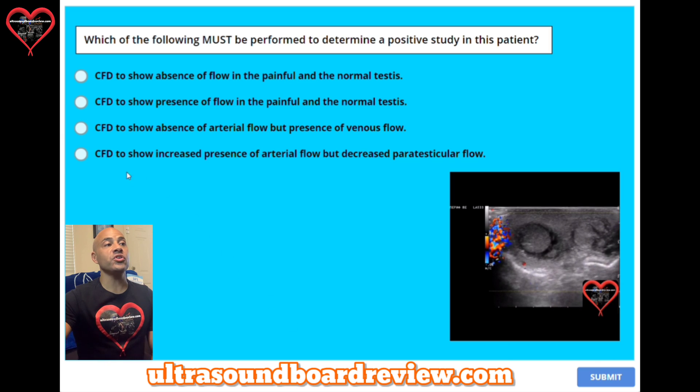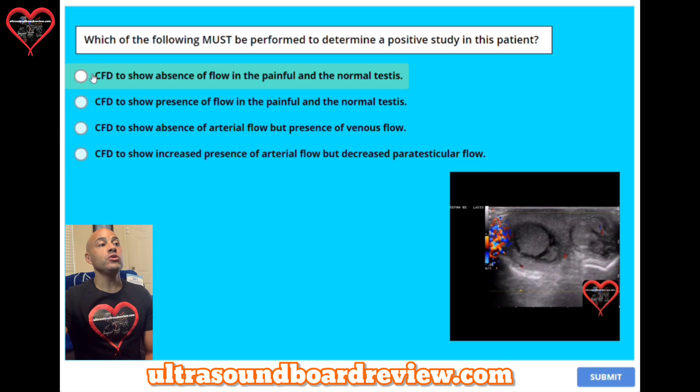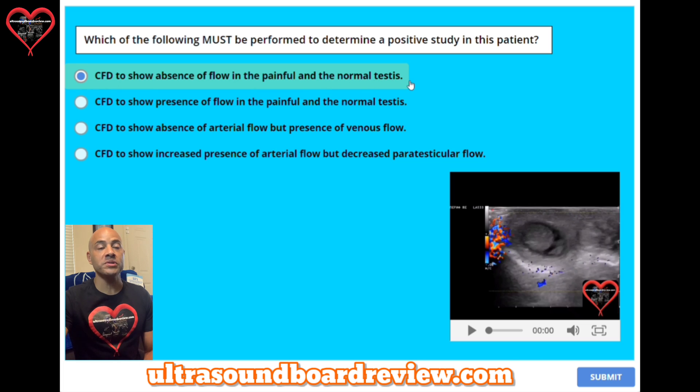The answer is A. Use color Doppler to show absence of flow in the painful and normal testes in patients who have testicular torsion.